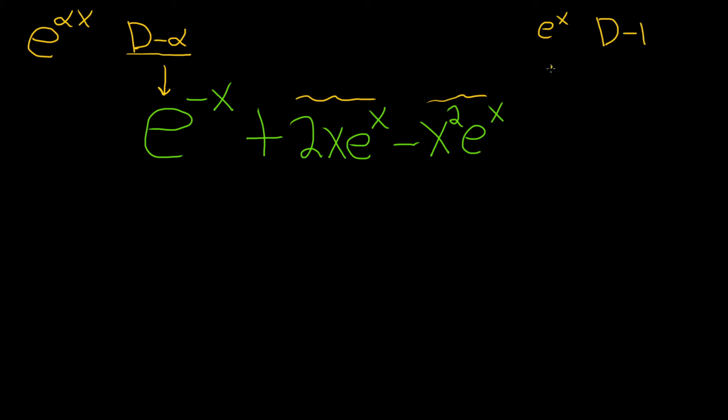Here's the interesting thing. If you have xe^x, then you need (D-1)². If you have x²e^x, then you would need (D-1)³. That's what we're going to use to get rid of this one, and it'll actually get rid of both.